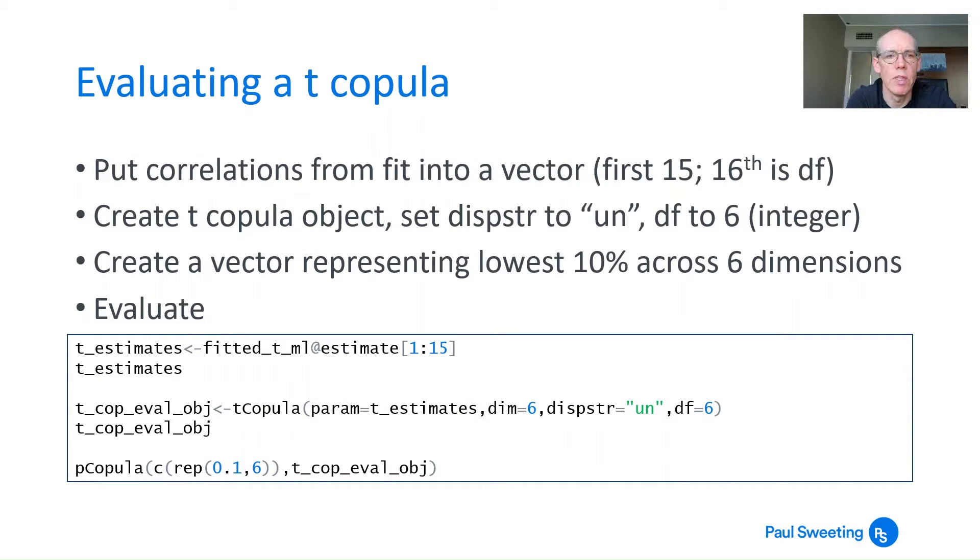The first thing we need to do is put the correlations from the fit into a vector. You remember the estimates we had - there were 16 rather than 15 because the 16th estimate was for the degrees of freedom. So if we want the correlations, we just take the first 15. Then we create a t copula object as we did before.